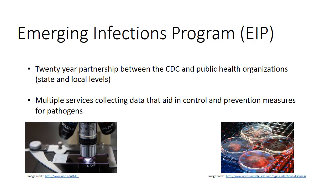One goal of EIP is the assessment and tracking of how emerging infections impact public health. Estimations of outbreak severity and vaccine effectiveness can be derived from this surveillance data. Multiple services aid in the development of control and prevention measures. EIP validates new methods of pathogen identification, which are now heavily culture-based.